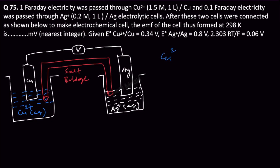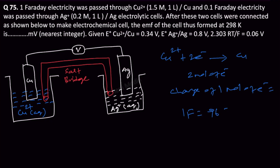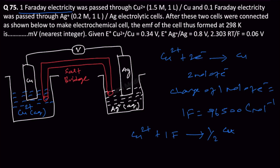Let us first find out the new concentrations. We have Cu²⁺ — if Cu²⁺ gains two electrons, it becomes Cu. So to convert it into Cu, we require two moles of electrons. We know that the charge of one mole of electrons equals one Faraday, which is 96,500 coulombs per mole. But do we have two Faraday here? No, we have only one Faraday. So only half a mole of Cu²⁺ gets converted — with one Faraday we can get only 0.5 moles of Cu.